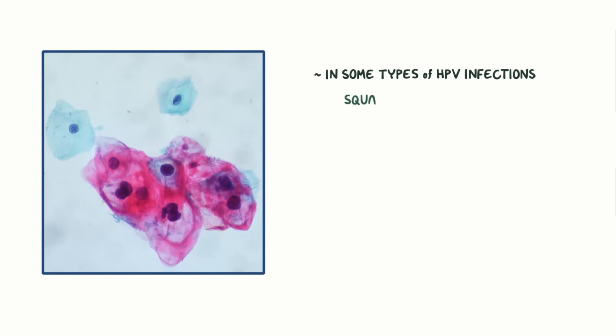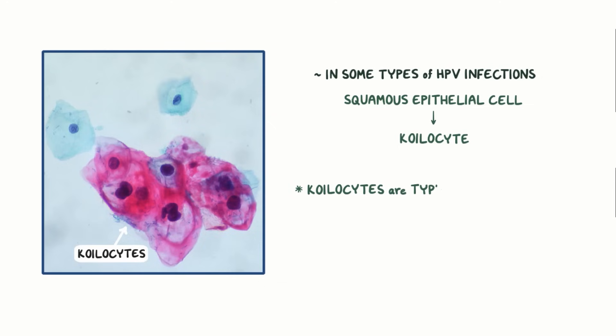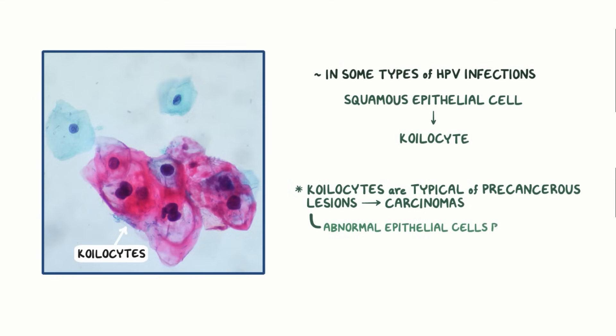In some types of HPV infections, a squamous epithelial cell can become a koilocyte — a cell with an irregular shape, enlarged and dark staining nucleus, and a clear area around the nucleus called a perinuclear halo. These cells are typically of precancerous lesions that can transform into carcinomas when the abnormal epithelial cells break through the basement membrane of the epithelium and invade other tissues.